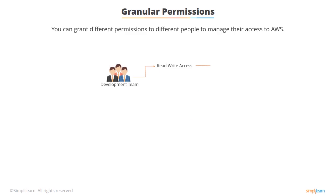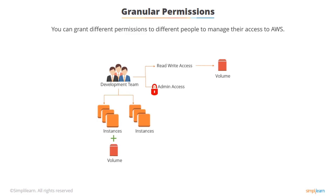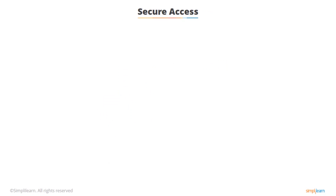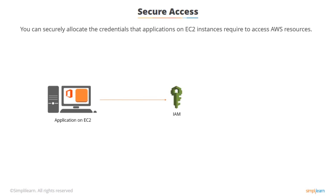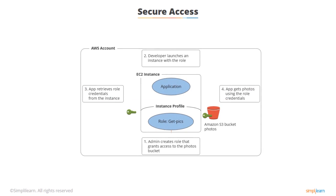IAM allows you to securely allocate the credentials that applications running on EC2 instances need so that they can access other AWS resources, for example S3 buckets or databases. If you have an application that runs on an EC2 instance and the EC2 instance has been configured accordingly in IAM, the application can automatically inherit the permissions it needs to access S3 buckets or databases without having to store or pass user credentials.